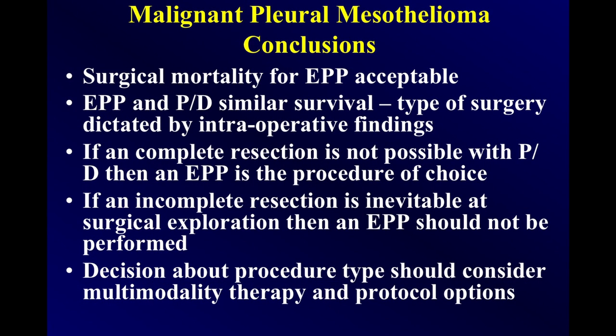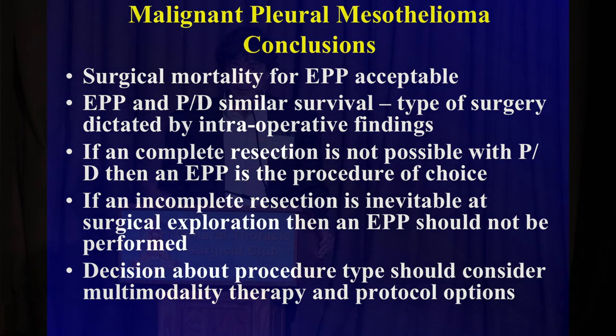In conclusion: surgical mortality for extrapleural pneumonectomy is acceptable. EPP and pleurectomy/decortication have similar survival in my view, and the type of surgery should be dictated by intraoperative findings. I won't say one is better than the other — it depends on what you find at surgery. If I can get all visible tumor out with a pleurectomy, that's what I do. If I think EPP is needed to clear the tumor, that's what I do. If I think I'd be leaving a lot of tumor behind, I won't do EPP. Going forward, we need better treatment modalities. Giving chemo before or after, radiation pre or post — I'm not sure it's getting us anywhere. Hopefully through laboratory research we can figure something out, and at least with surgery we have tissue to study. Thank you.